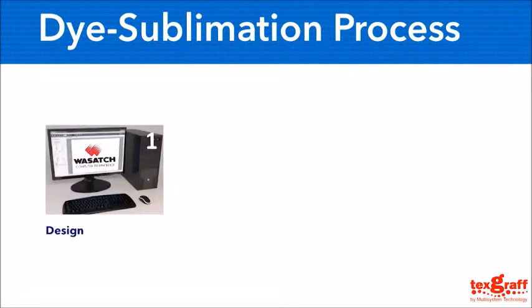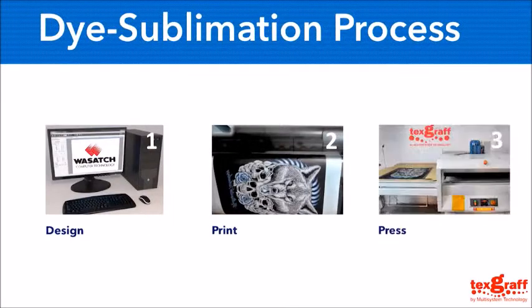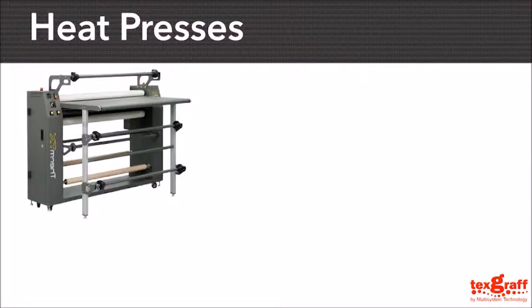The dye sublimation process is similar to the DTG printing process. First is to design your artwork and open it on the RIP software. Second, you go ahead and print your design on the transfer sublimation paper — you can control the settings and quality similar to DTG. Lastly, you sublimate by using a flat heat press like the Express M110, or a roll-to-roll calendar like the Therm-TX 44, so the image will be transferred from the paper to the fabric. The calendar heat press does roll-to-roll, sheet-to-roll, and sheet-to-sheet.